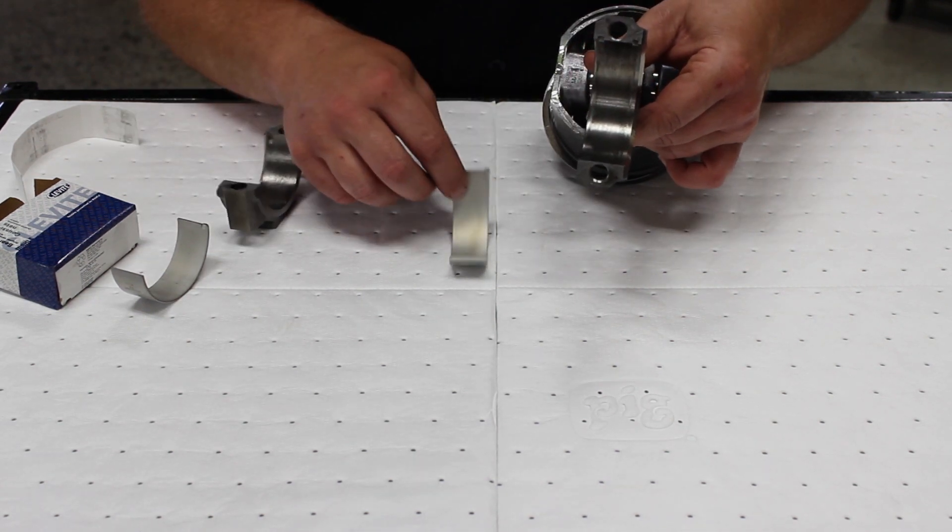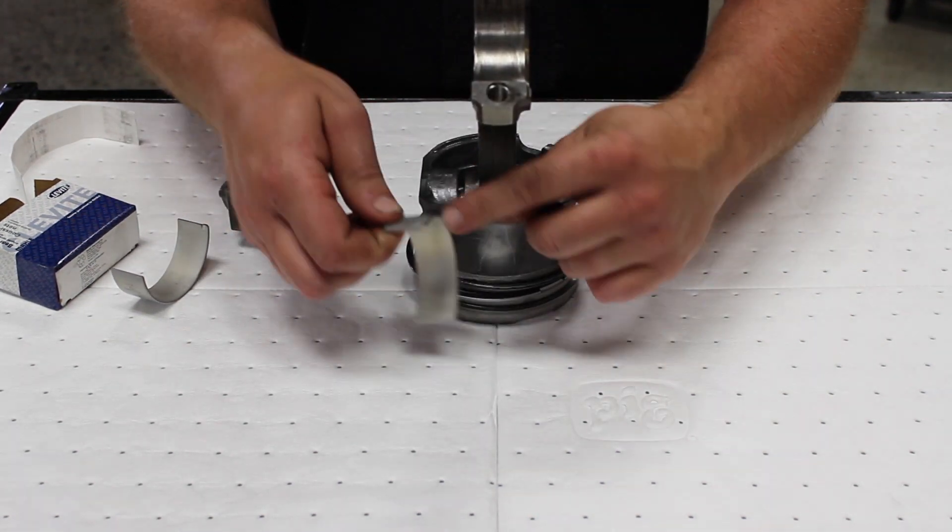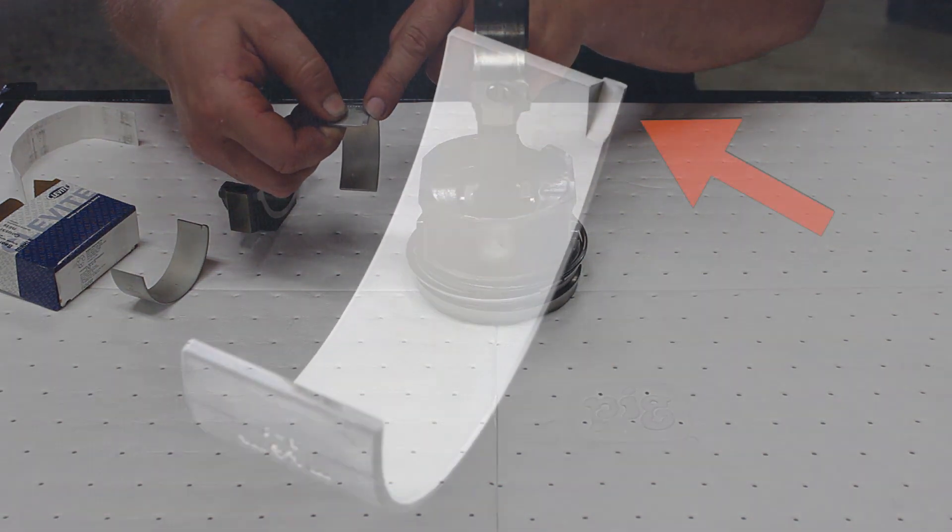On the rod side, we want to use the bearing with the tang all the way to the edge.